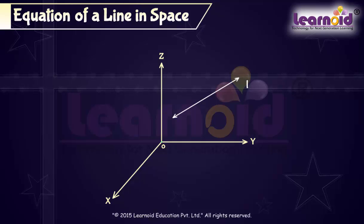A line is unique if it passes through a given point and has given direction, or passes through two given points. Let us try to find equation of a line through a given point and parallel to a given vector B.